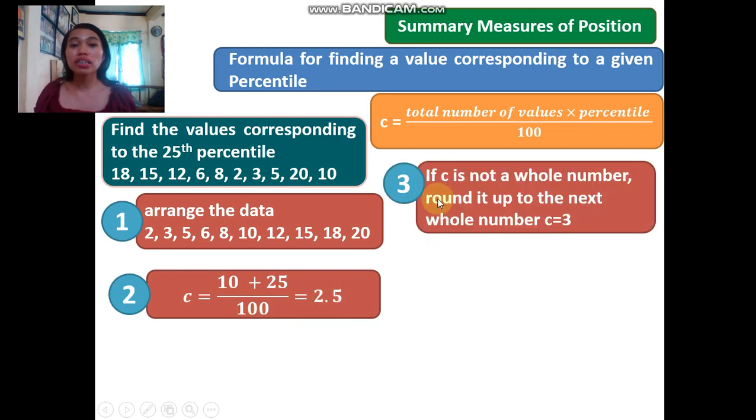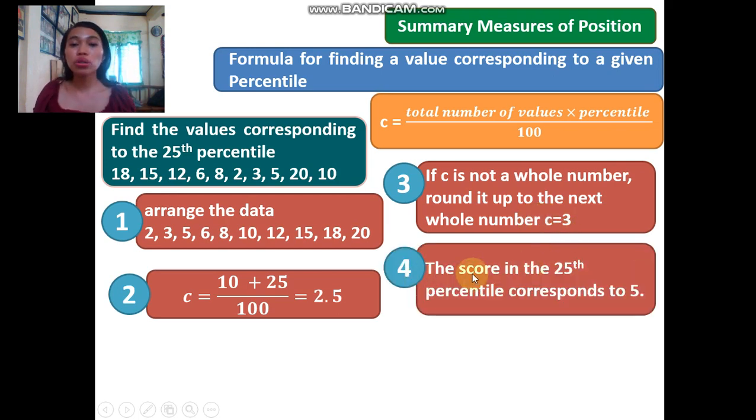The third step: if C is not a whole number, round it up to the next whole number. Our C is 2.5, so we round up to 3. The fourth step is our conclusion. The score in the 25th percentile corresponds to 5. How did we get 5?